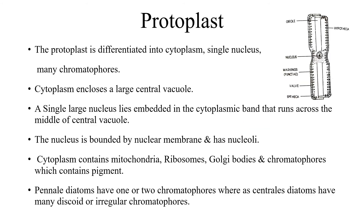Protoplast: the protoplast is differentiated into cytoplasm, a single nucleus, and many chromatophores. Right in the center of the cell is a large vacuole, so the nucleus is held in the center by cytoplasmic strands. It is a eukaryote with a well-defined nucleus. Cytoplasm contains mitochondria, ribosomes, Golgi body, and chromatophores. Chromatophores contain pigments. Pennate diatoms have one or two chromatophores, whereas in Centrales there are innumerable chromatophores.